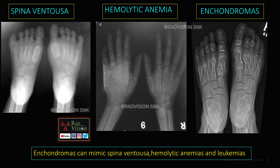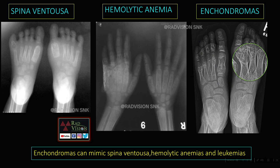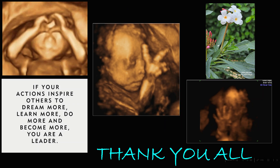Finally, these are pathologies involving the metatarsals and metacarpals. Fusiform enlargement of the metatarsal with adjacent soft tissue swelling is seen in spina ventosa (TB dactylitis). Short tubular bones of the hands with thin cortex, remodeling, and multiple trabeculations indicate hemolytic anemia. Multiple enchondromas with bony remodeling represent enchondromatosis. These are the differentials — spina ventosa, hemolytic anemia, and leukemias — for short tubular bone lesions. Thank you all.